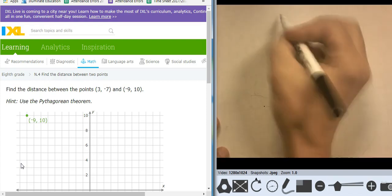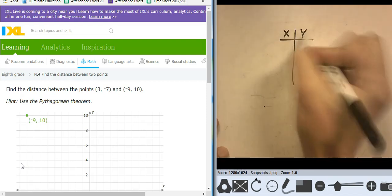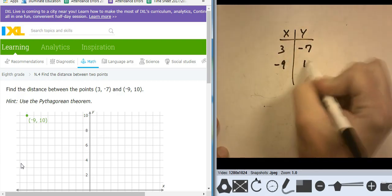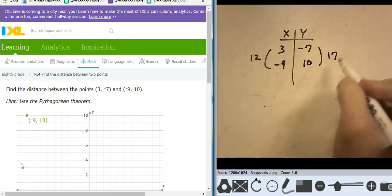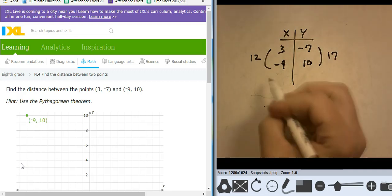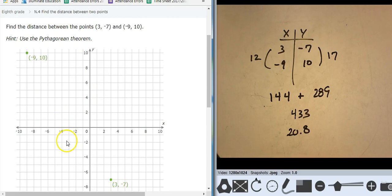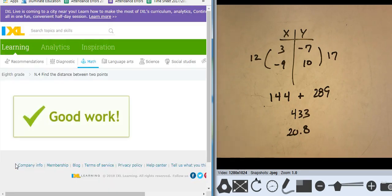Here's the next one. 3, negative 7, negative 9, and 10. That's a change of 12. That's a change of 17. So 12 squared is 144. 17 squared is 289. Adding them together takes me to 433. I'm going to take the square root of 433. Takes me to 20.8 with the rounding.